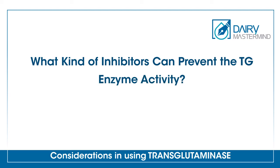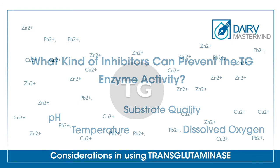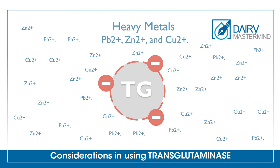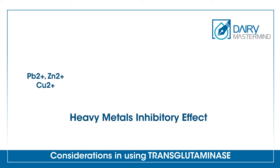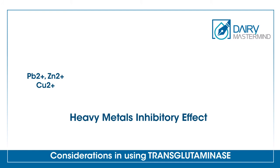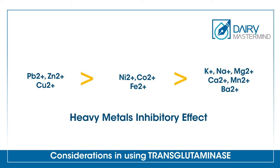What inhibitors can prevent TG enzyme activity? In addition to considering optimal conditions for pH, temperature, substrate quality and dissolved oxygen, some inhibitors like heavy metals can prevent TG enzyme activity. Inhibitors such as lead, zinc and copper have an inhibitory effect on enzyme function, because these heavy metals bind the thiol group of the single cysteine residue, which is the active site of TG enzyme. Research has shown that TG enzyme is moderately inhibited by nickel, cobalt and iron. However, potassium, sodium, magnesium, calcium, manganese and barium do not affect the activity of the purified TG.